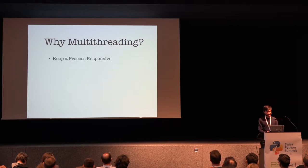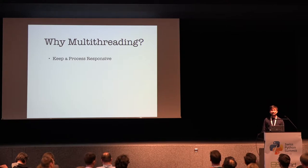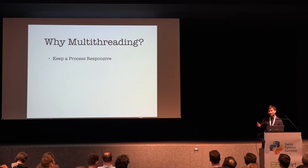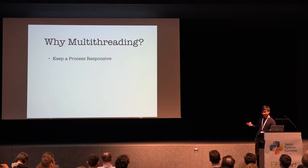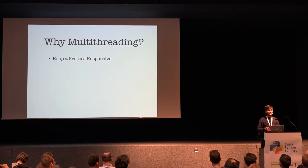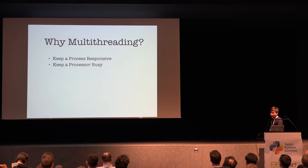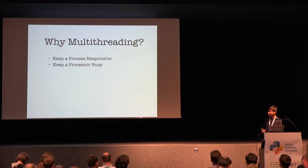Why do we need multi-threading in the first place? To keep processes responsive. If you used Microsoft Word in the early 2000s — and I can rewind to my school days — if you used the print command, the system used to hang. That was due to multi-core utilization not being evolved in those days. You had that IO thing happening but couldn't do CPU-bound stuff. So that was one reason why we need multi-threading — to keep a processor busy. You have a 2.7 GHz processor and you want to use it to its full potential.